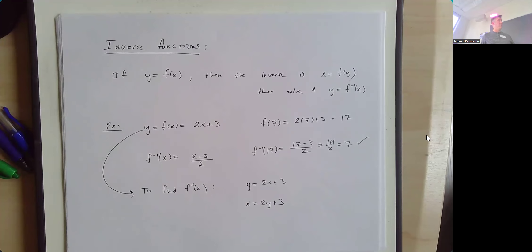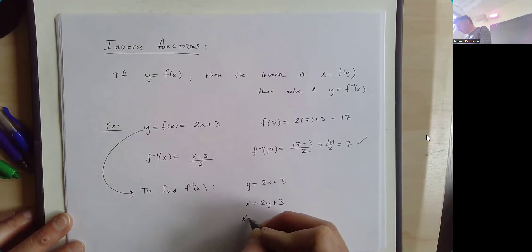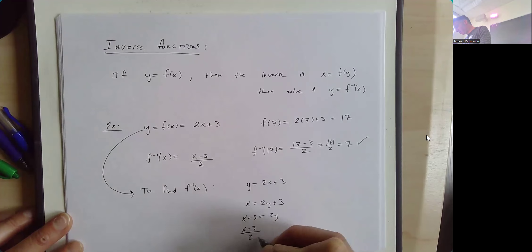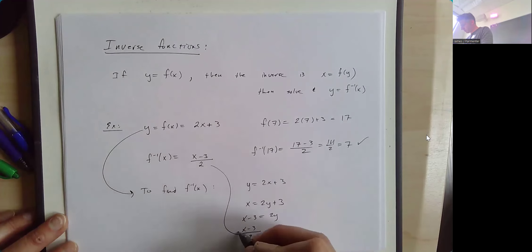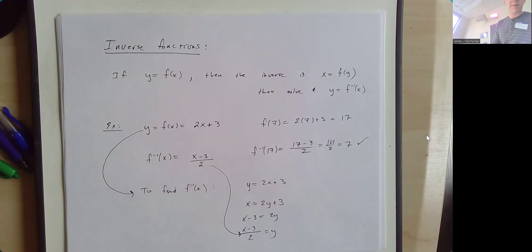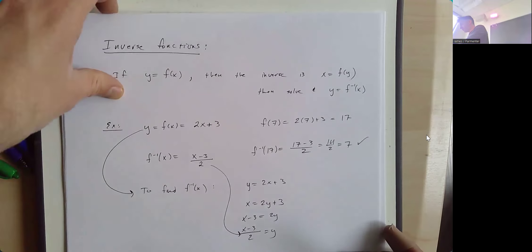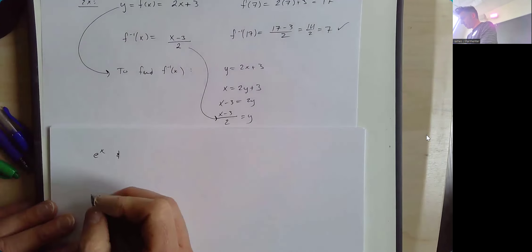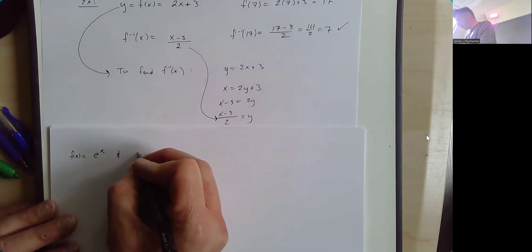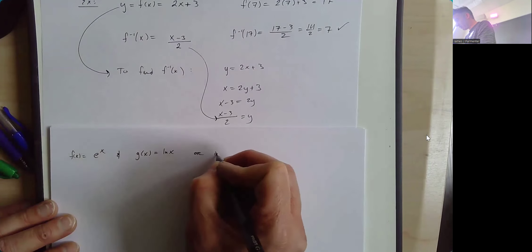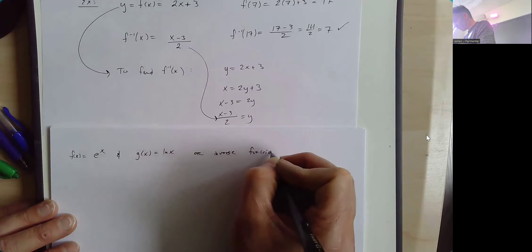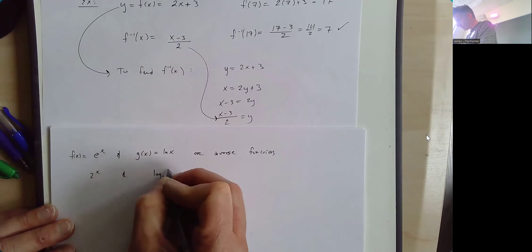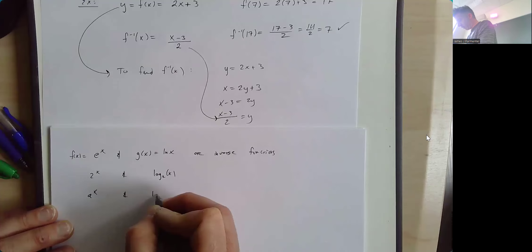Another very common example of inverse functions: e to the x and the natural log of x, or really any exponential function and the log with the same base. f of x equal to e to the x and g of x equal to the natural log of x are inverses, as are 2 to the x and log base 2 of x, or any exponential function and the logarithm with the same base.